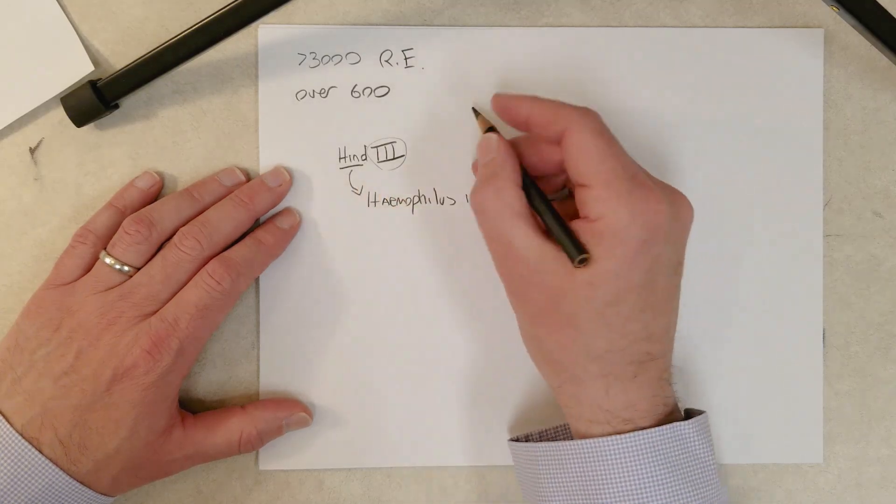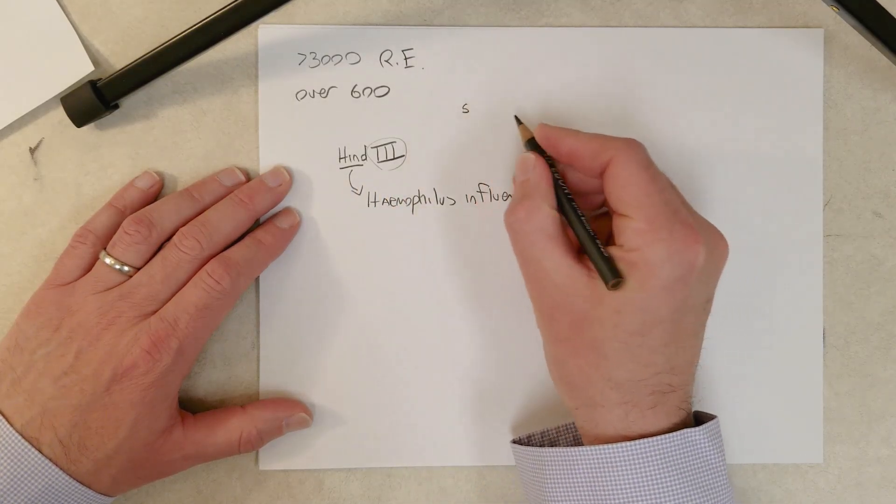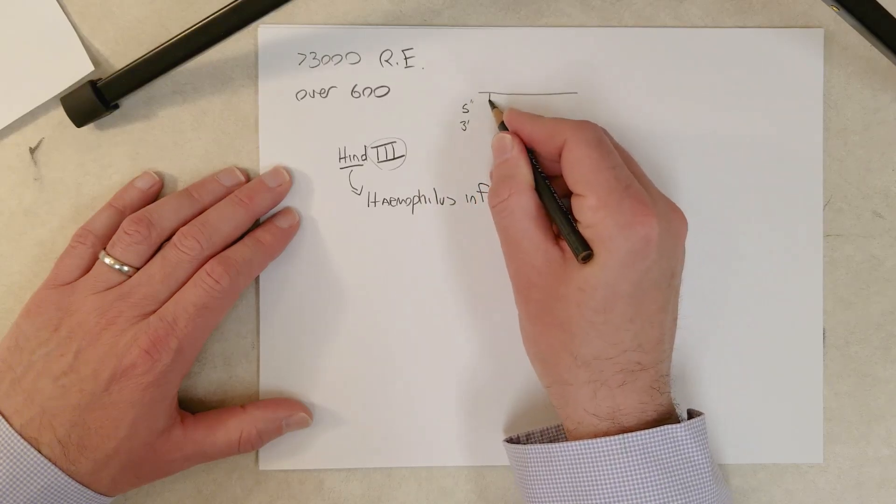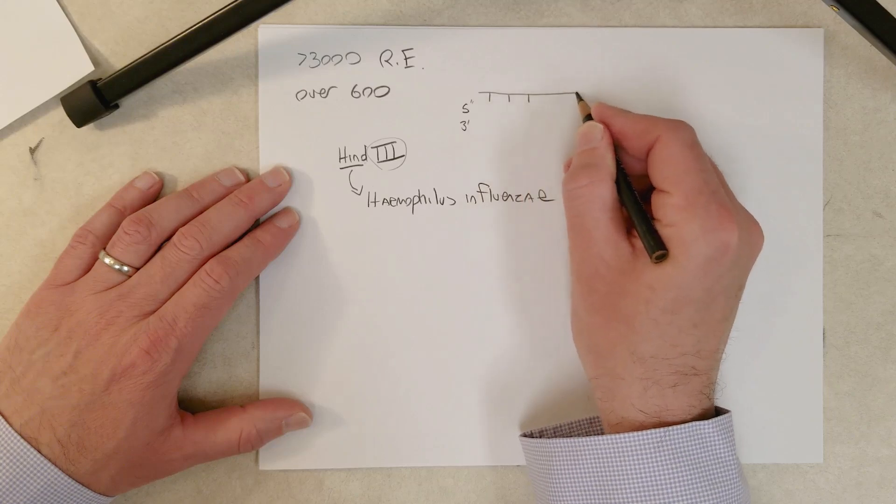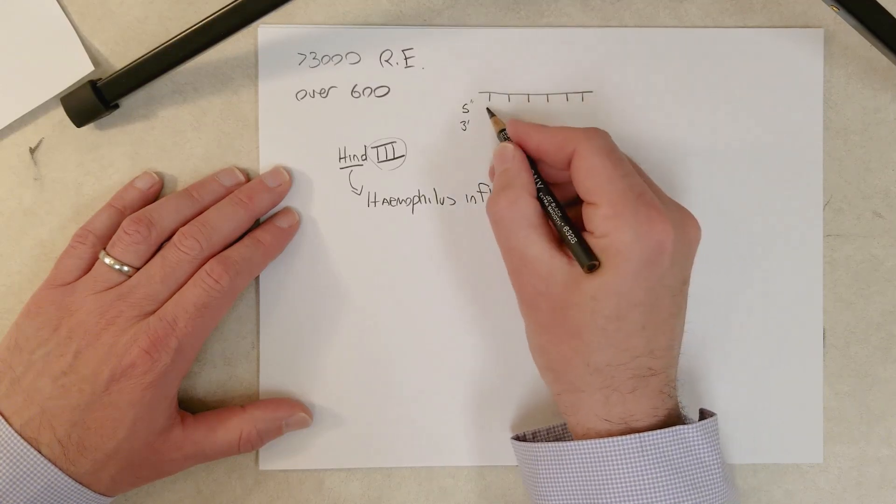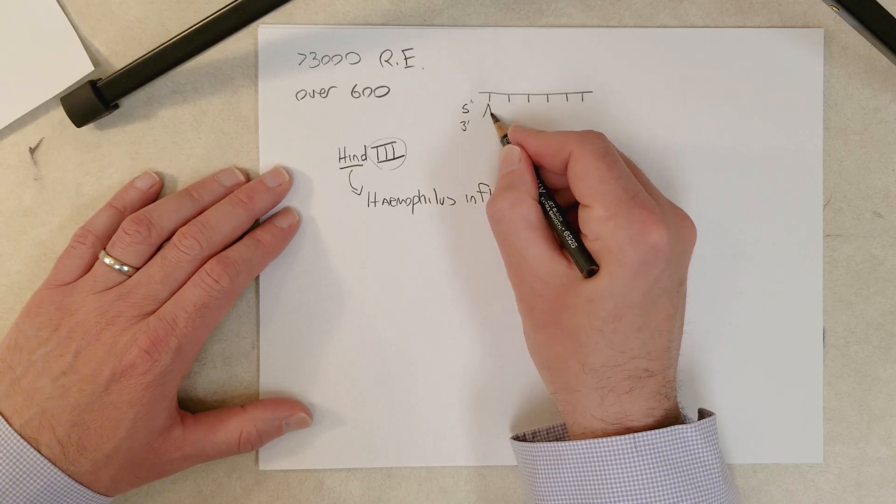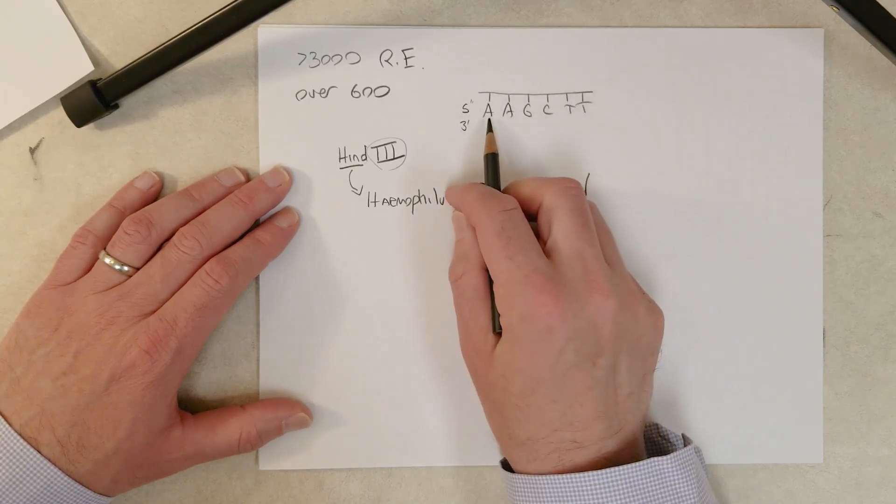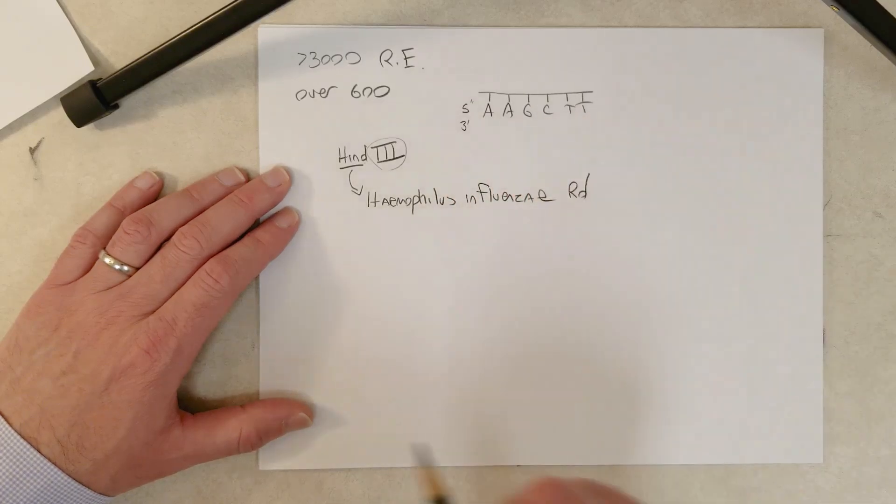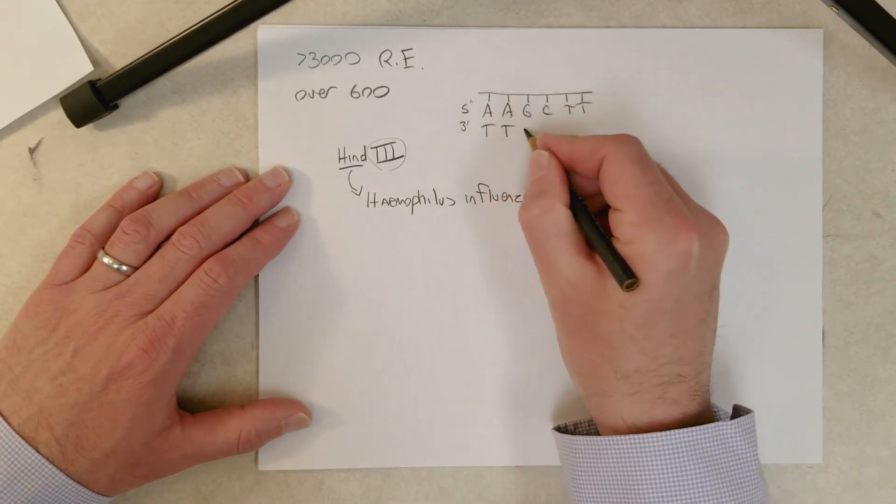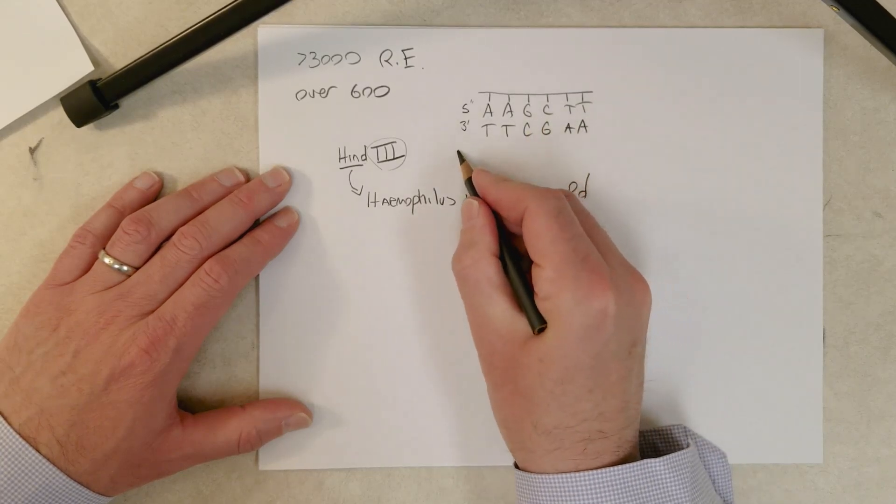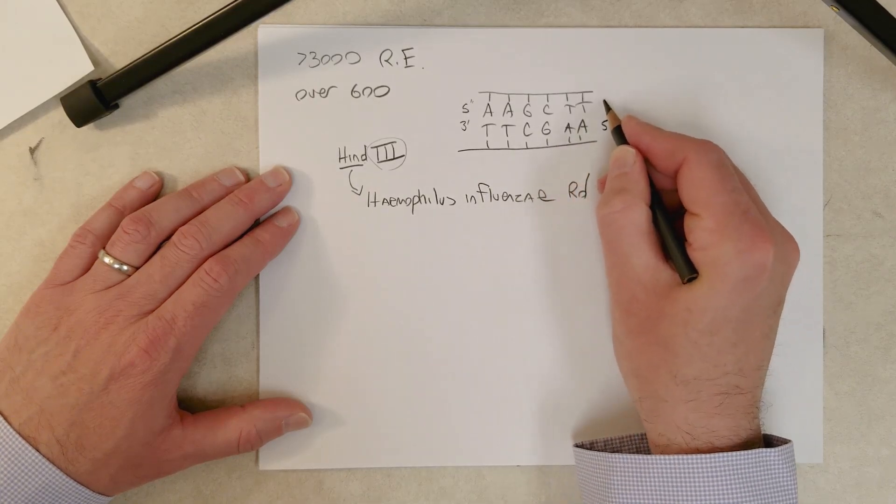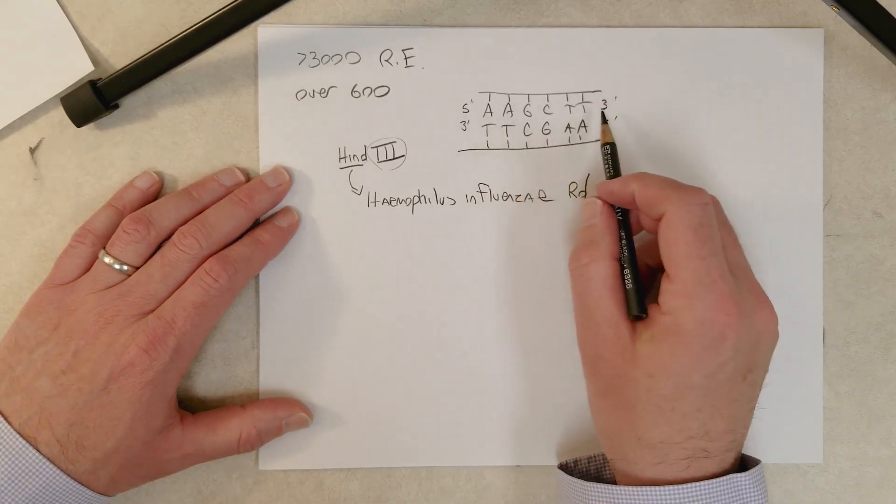So this enzyme, if you were to mix it with a solution of DNA, what it would do is it would look for DNA or it would bind to DNA of a certain sequence. And this sequence is six nucleotides or six base pairs long.